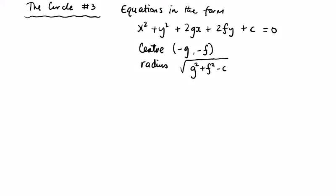In this video we're going to look at equations in the form x squared plus y squared plus 2gx plus 2fy plus c, where the centre is minus g, minus f and the radius is the square root of g squared plus f squared minus c. Just to clarify, in the previous video the centre was (h, k); now it's (minus g, minus f) because we have a different form to write our equation in. These formulae are in the formula booklet on page 19.